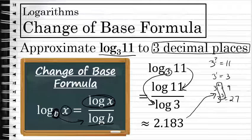That makes sense based on what I discussed at the beginning of this video. You can check your answer by using your calculator and doing 3 to the power of 2.183. You won't get exactly 11 because this is rounded to three decimal places. But to three decimal places, log base 3 of 11 is 2.183.